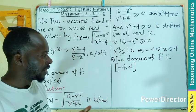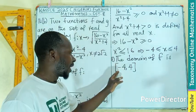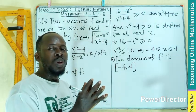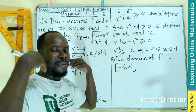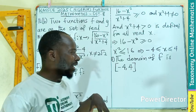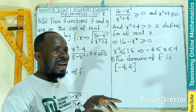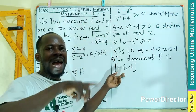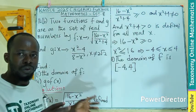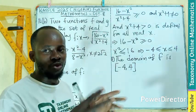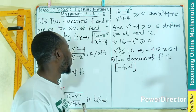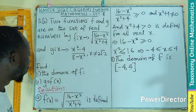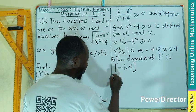There are two ways of representing the domain: using the inclusive interval negative 4 to 4, or stating the values that make the function undefined. These are just different representations. We are done with the first part. Now the second part is finding the composite function g of f, written as g of f(x).